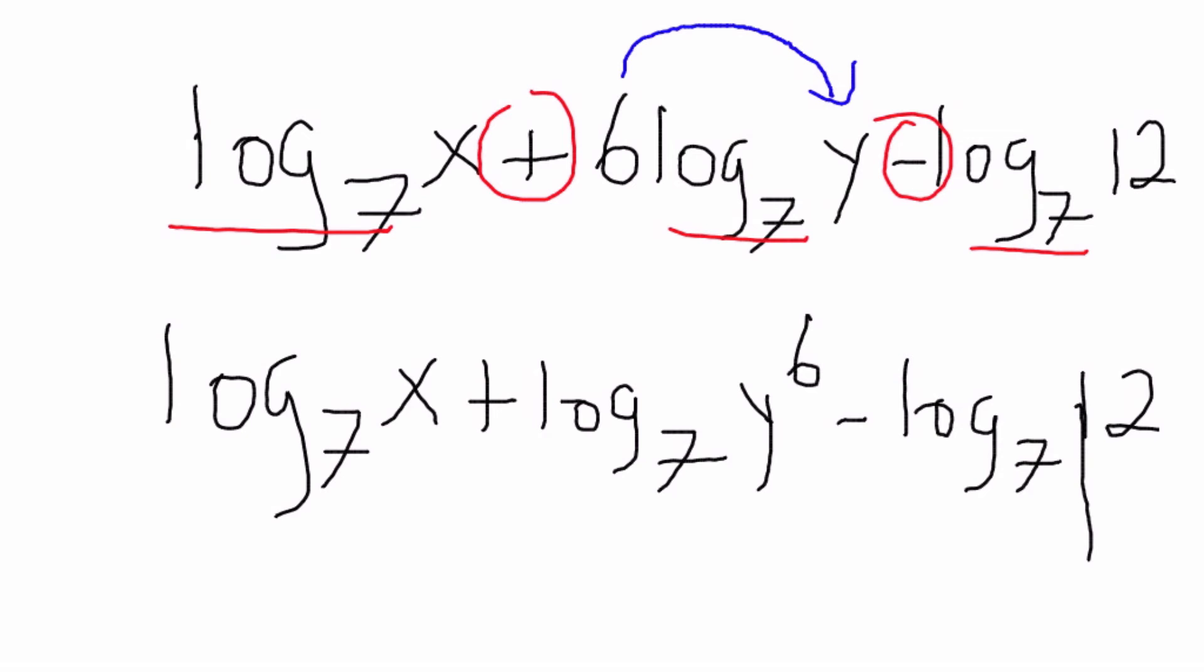So now that we have that, we can, basically, I'm just going to do the first part and then I'll show you the next part. So, I'm going to clean this and I'm going to rewrite what we just had. So we had log base 7 of x plus log base 7 of y to the 6th minus log base 7 of 12.